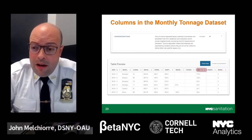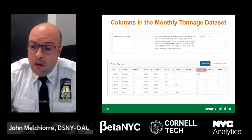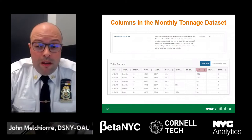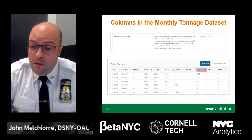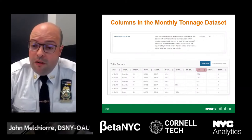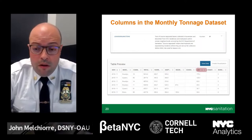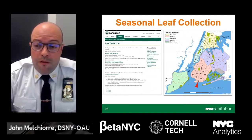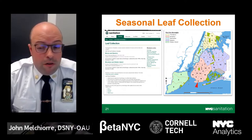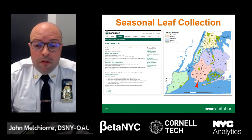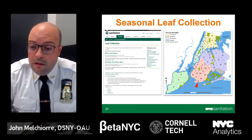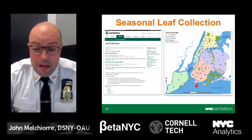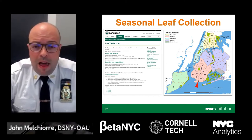The ninth column, highlighted in maroon, shows the tons of source-separated leaves collected in November and December from New York City residents within certain neighborhoods. The code for leaf collection is 52. The neighborhoods within the five boroughs that receive seasonal leaf collection include those with the most leaves — all of Queens, all of Staten Island, nearly all of Brooklyn, and just about half of the Bronx.